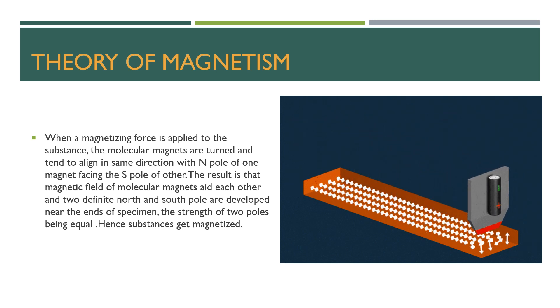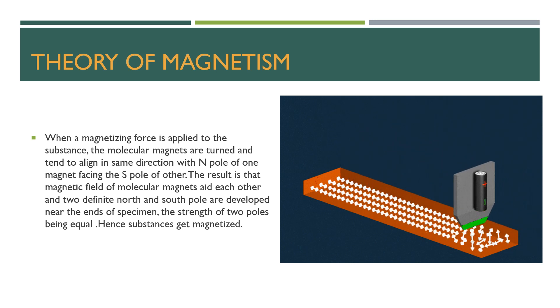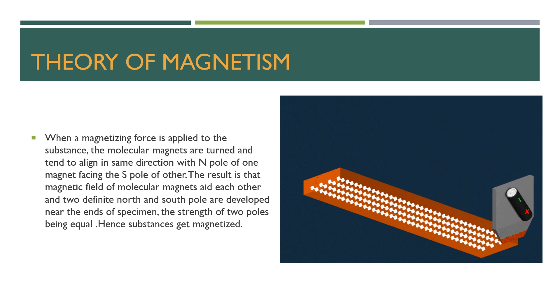The result is the magnetic field of the molecular magnets aid each other, and two definite north and south poles are developed near the ends of the specimen, the strength of two poles being equal. Hence the substance gets magnetized.